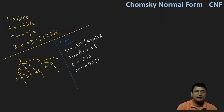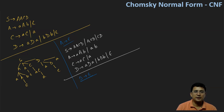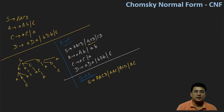We also get productions: aDA, then B, DB, and epsilon from substituting A. Now we substitute epsilon in the next nullable symbol. So S produces AACD, then AAC, then ACD. Next, our S produces ACD.